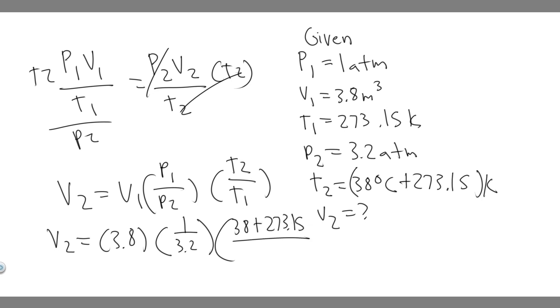And then you're going to want to divide that by 273.15. And so now what you're going to do is just go ahead and plug this in. So you're going to do 3.8, multiply that by 1 divided by 3.2, and multiply it by 38 plus 273.15 divided by 273.15. And so when you go ahead and do that, you're going to get V2.